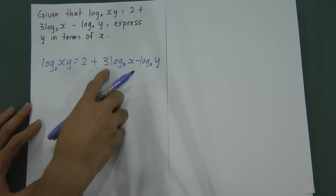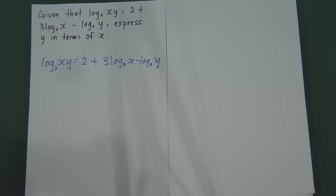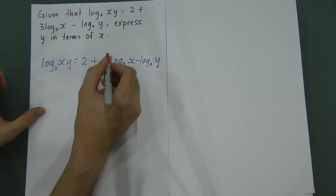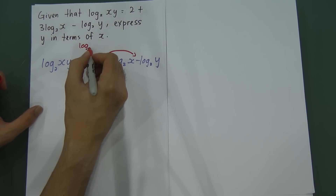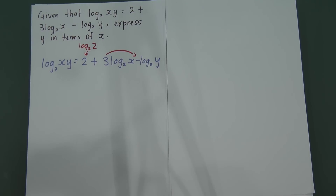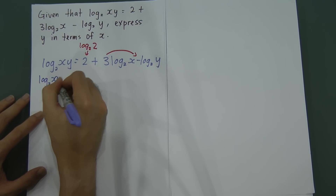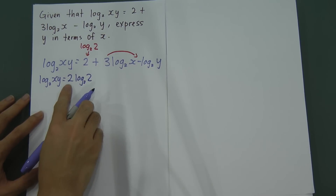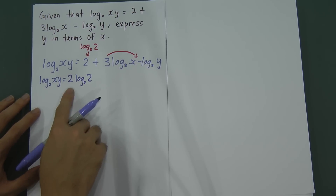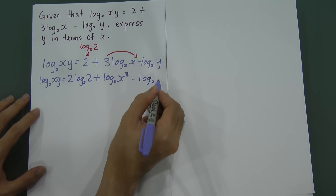When you see the 3 (the coefficient in front), you have to move it to the back to become a power — x to the power of 3. Remember: move the number in front to become a power. For the standalone 2, you need to add log base 2, because log base 2 of 2 equals 1, and 2 times 1 gives back 2. So the next step gives: log₂(xy) = 2·log₂2 + log₂(x³) − log₂y. And 2·log₂2 = 2·1 = 2.